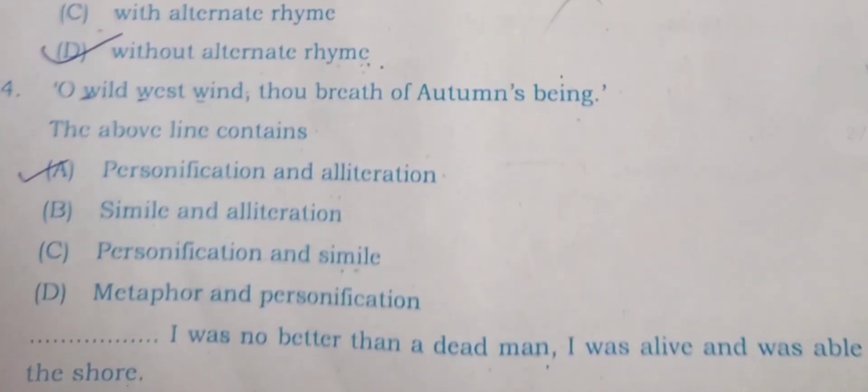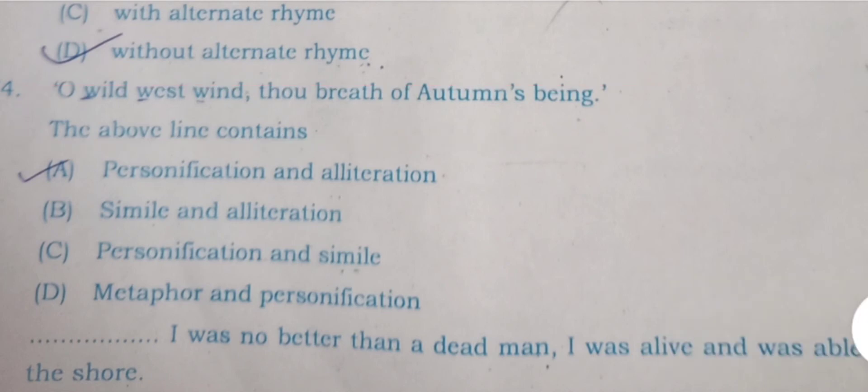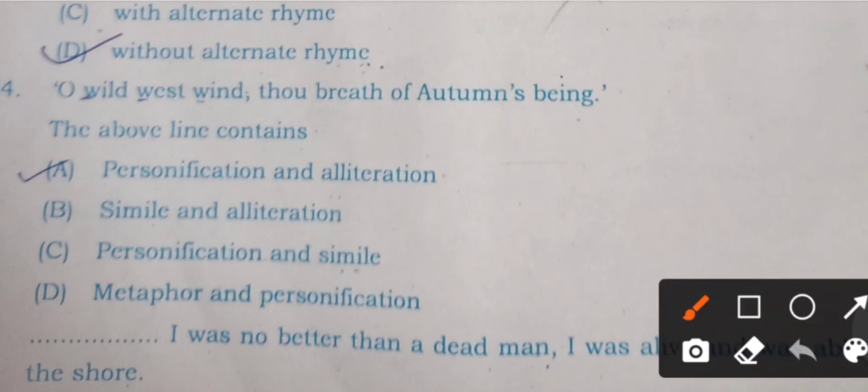Question 74: O west wind, O wild west wind, thou breath of autumn being - this is from John Keats' famous poem Ode to the West Wind. The above line contains figures of speech: A) personification and alliteration, B) simile and alliteration, C) personification and simile, and D) metaphor and personification. Here alliteration is there - W sound is there - and then personification is there.